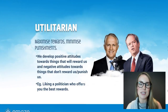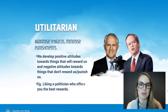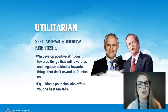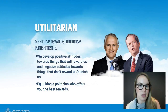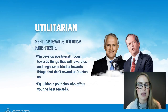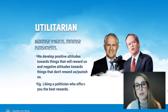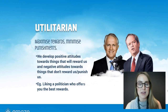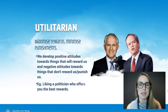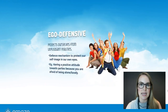The next function is utilitarian — the idea that we have attitudes to maximise rewards and minimise punishment. We develop positive attitudes towards things that will reward us. For example, with politicians, you're more likely to vote for someone who's going to help you and act in agreement with your values. We have a negative attitude towards things that don't reward us or might even punish us, such as policies affecting university tuition rates or Centrelink payments.